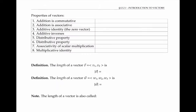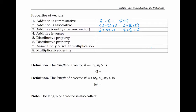Many of the properties from arithmetic still hold for vectors. Addition is commutative: a plus b equals b plus a. Addition is associative: we can group in any way and still get the same answer. There's a zero vector whose components are all zeros, and adding zero to any vector gives the original vector. Vectors have additive inverses: adding a to negative a gives the zero vector. We also have distributive properties for multiplication over addition, and scalar multiplication is associative and can be grouped in different ways.